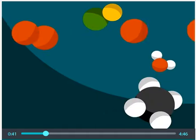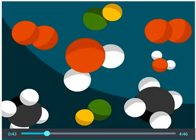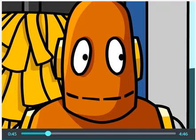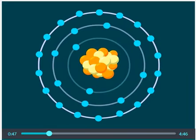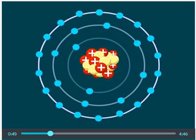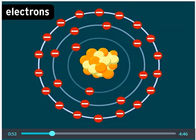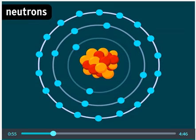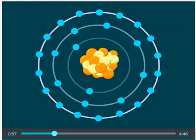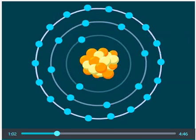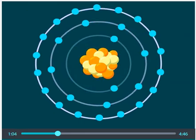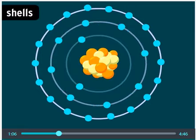But atoms like to stick together, and the reason has to do with what's inside them. Atoms are made up of three basic particles: positively charged protons, negatively charged electrons, and neutrons, which have no charge. Protons and neutrons clump together in the center of an atom, forming its nucleus. Electrons whiz around the nucleus at different distances, which we call shells.